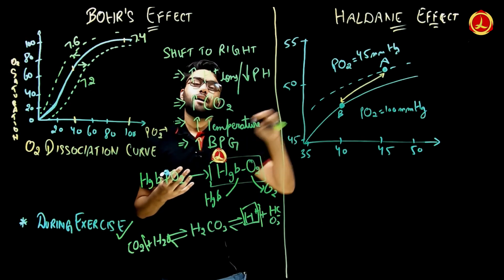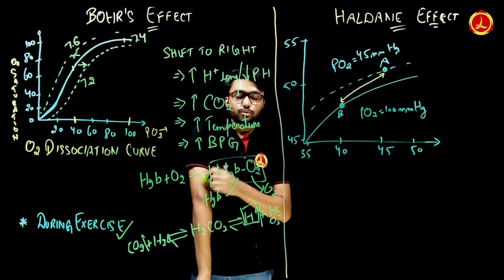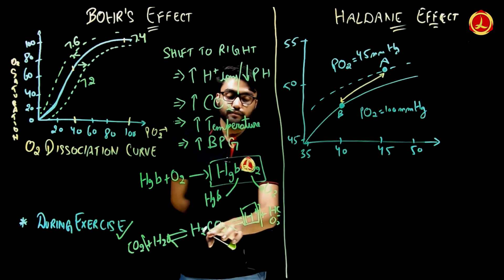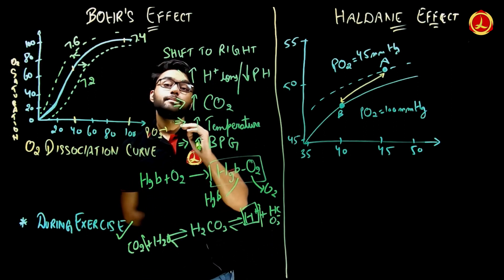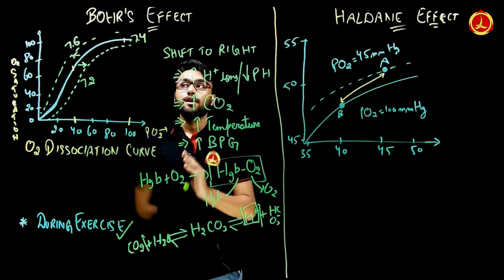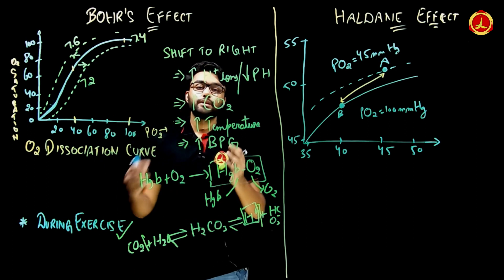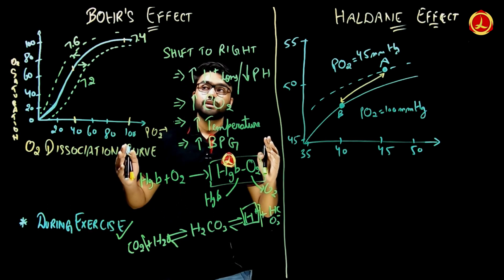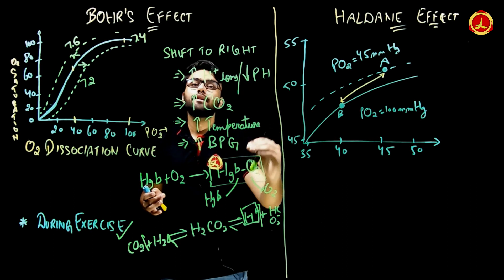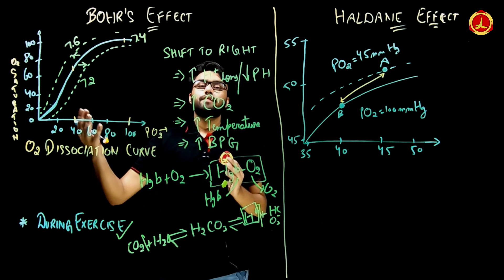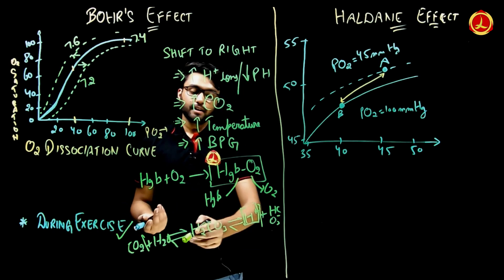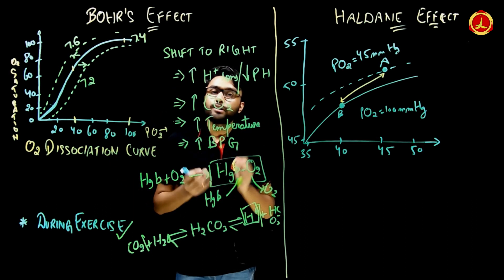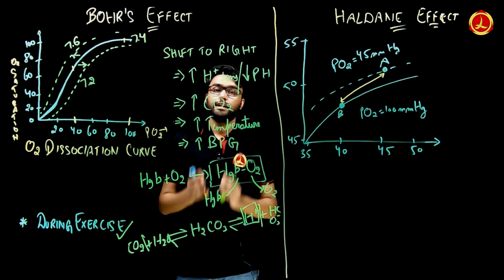In the lungs, H+ ions decrease because they react with HCO3- (bicarbonate ions) to form carbonic acid, which breaks down into H2O and CO2, and that CO2 is expelled. So in the lungs, the curve shifts left, leading to more association of hemoglobin with oxygen — the opposite of what happens in the tissues, where dissociation occurs due to the right shift.